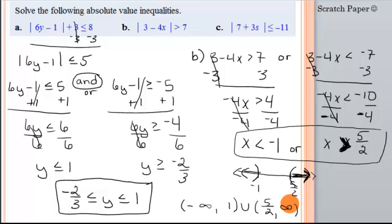Very quickly, look at c. It says the absolute value of something is less than or equal to negative 11. Is it possible for the absolute value of anything to be negative? It can't be negative, so how can it be less than a negative number? It's not possible — absolute value is always zero or positive, and this says it must be less than some negative number. So this can never happen, and the answer to c will actually be the empty set.